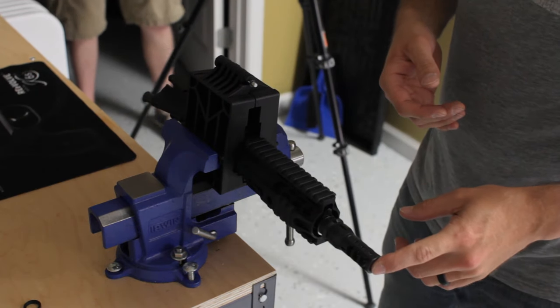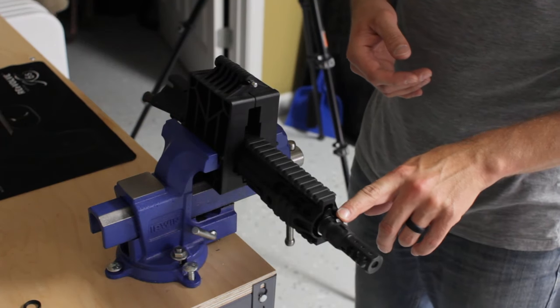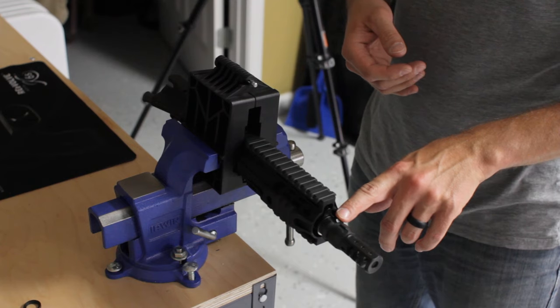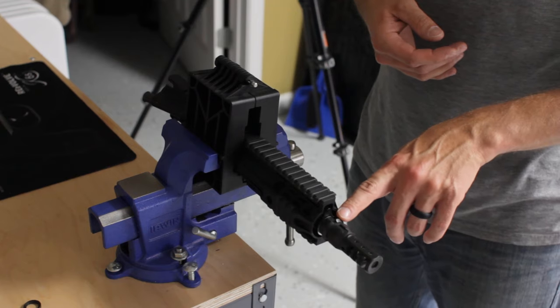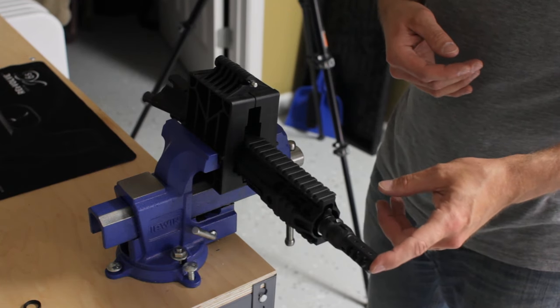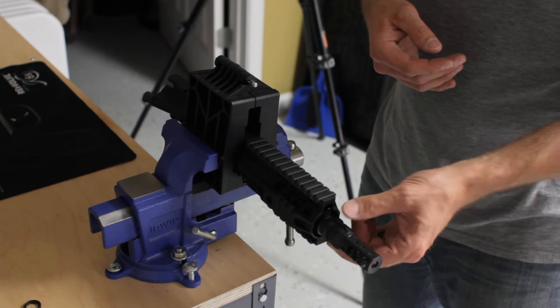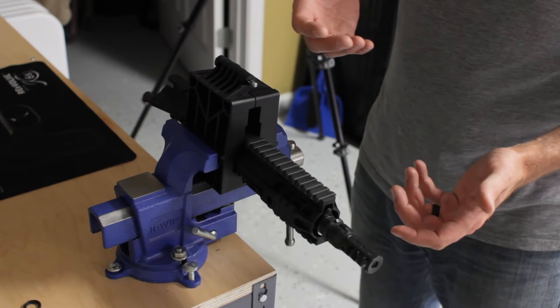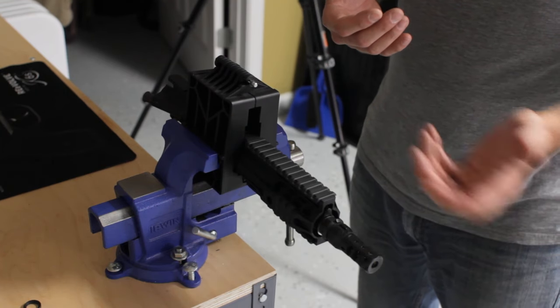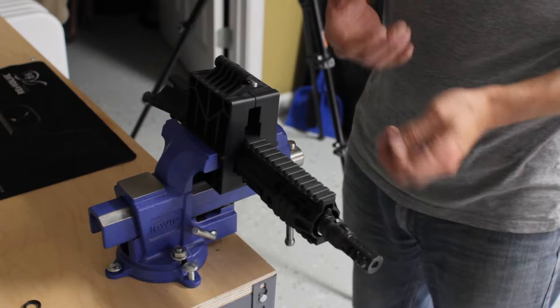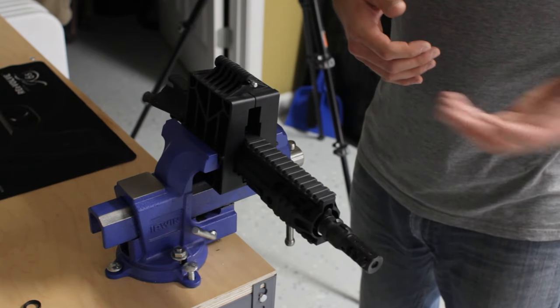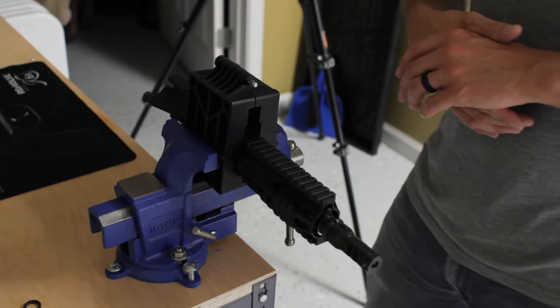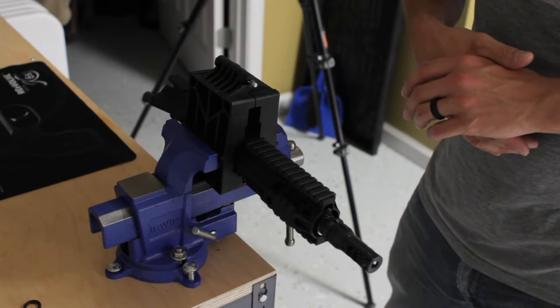Another neat feature of the Dead Air line of suppressors is that you can buy these keymo brakes and flash hiders not only for a 7.62x51, you can also get them for the 5.56x45. They come in the 1/2x28 threads and what you're able to do with that is you're able to mount your .30 caliber suppressor onto your 5.56 guns and then back to the .300 Blackout or .308 all the way up to .300 Win Mag when you use the Dead Air Sandman line of suppressors.